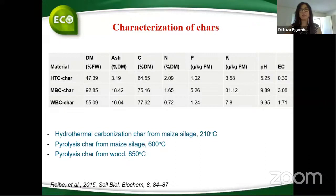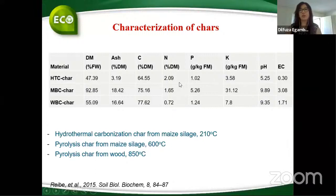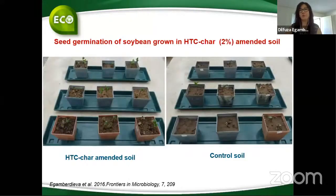The properties of biochar include being rich in nutrients like potassium, phosphorus, and nitrogen, but this depends on production technology and pyrolysis temperature. For example, biochar produced by hydrothermal carbonization at 210 degrees has high carbon, lower pH, and higher nitrogen. Biochar produced from food waste has high carbon and very high potassium and phosphorus content. These nutrients improve soil nutrients and the nutrient cycle.